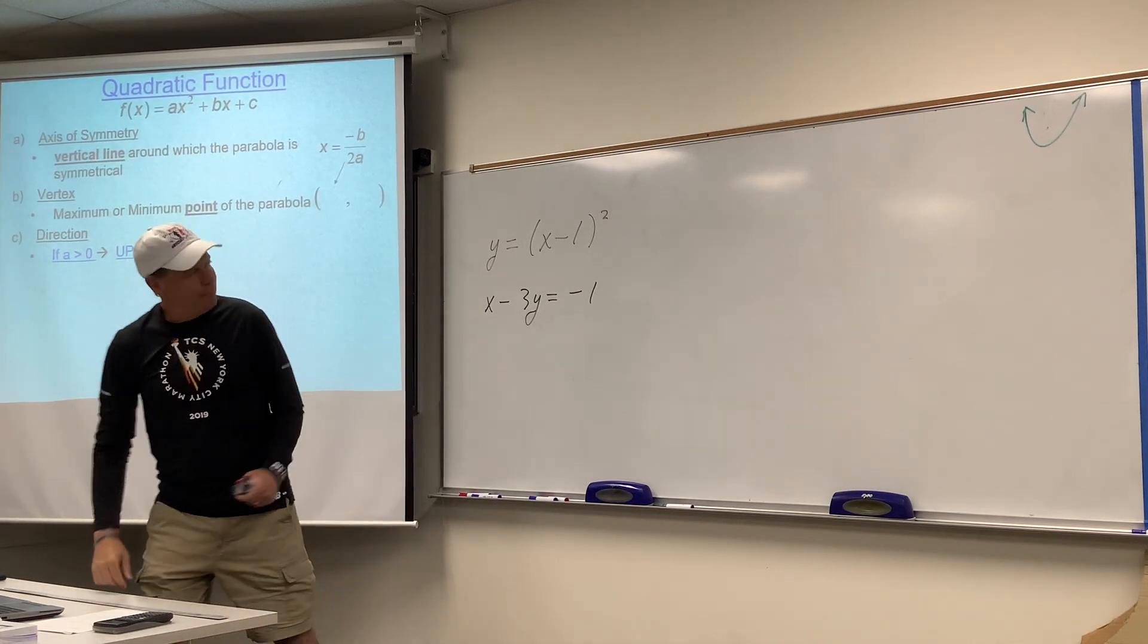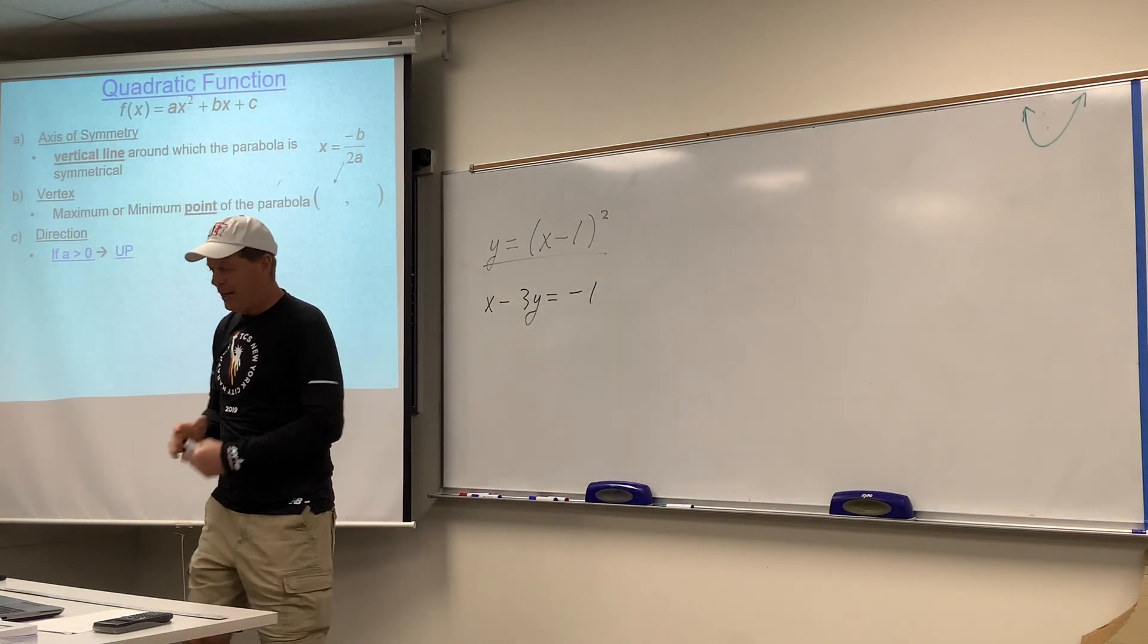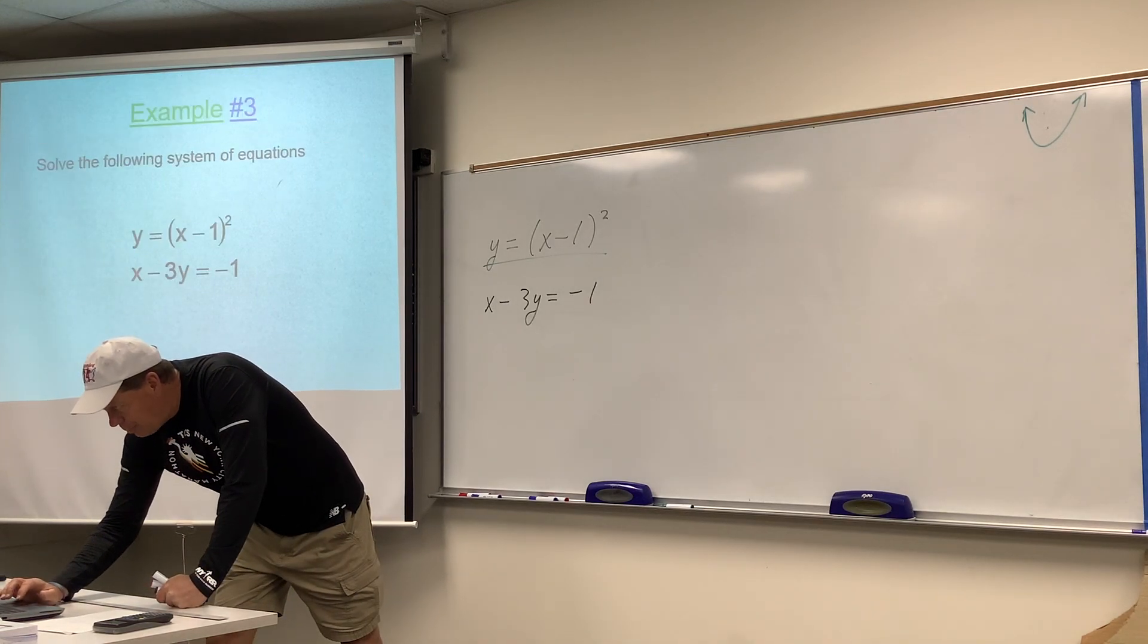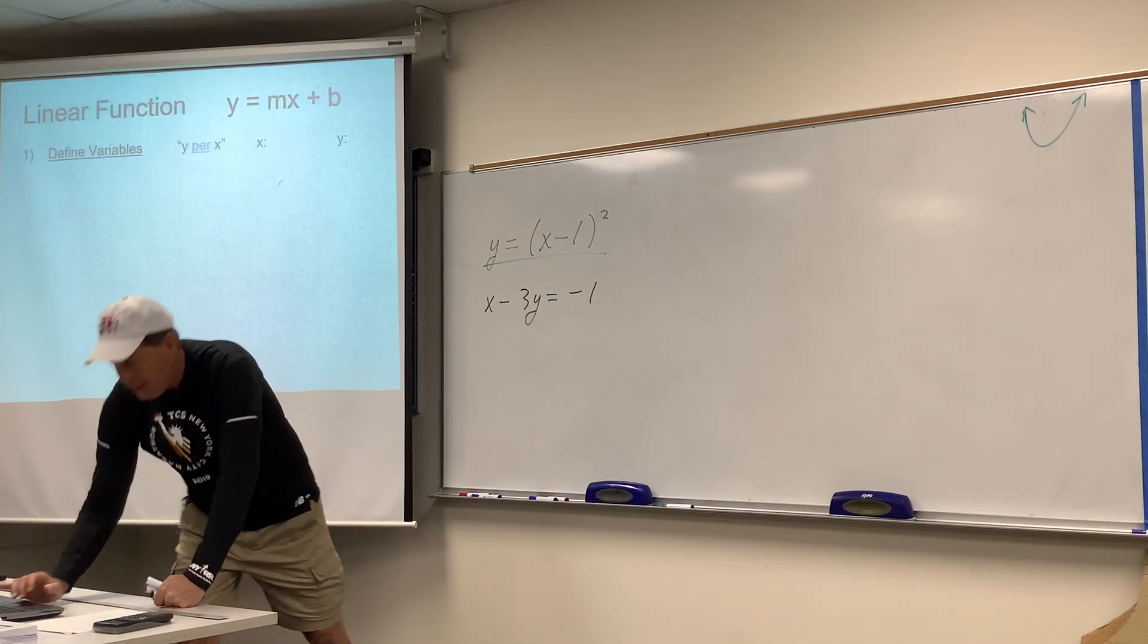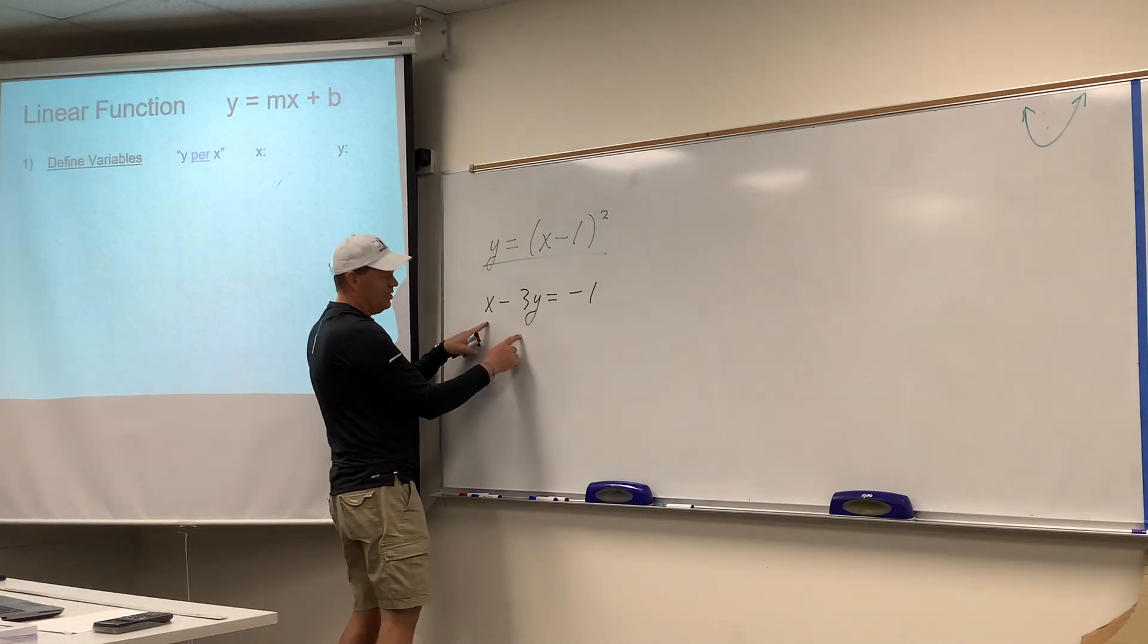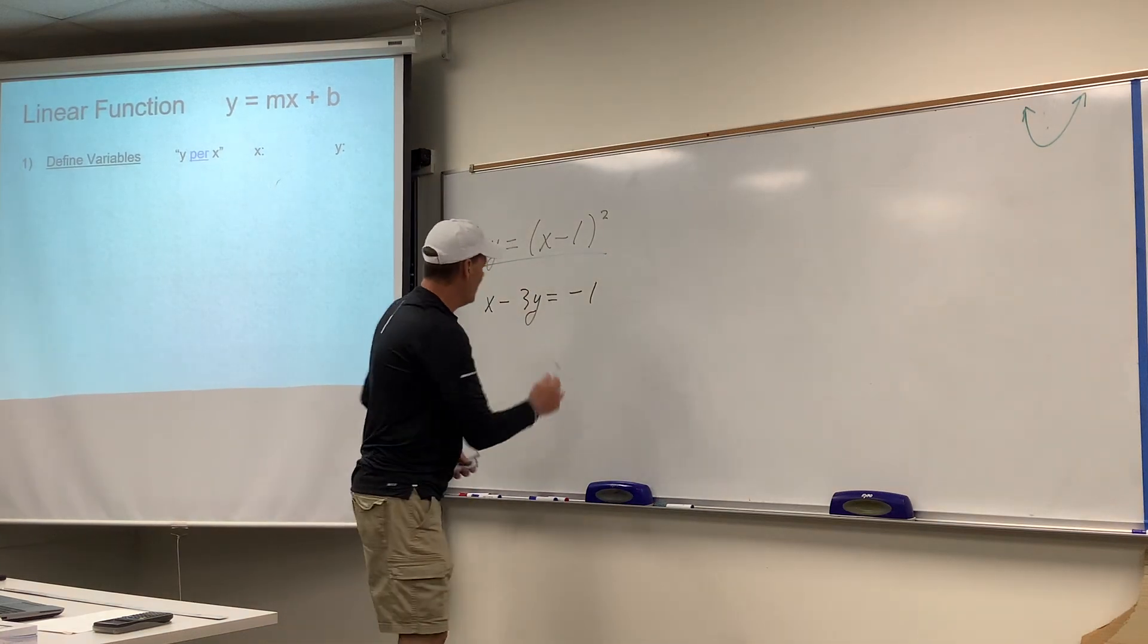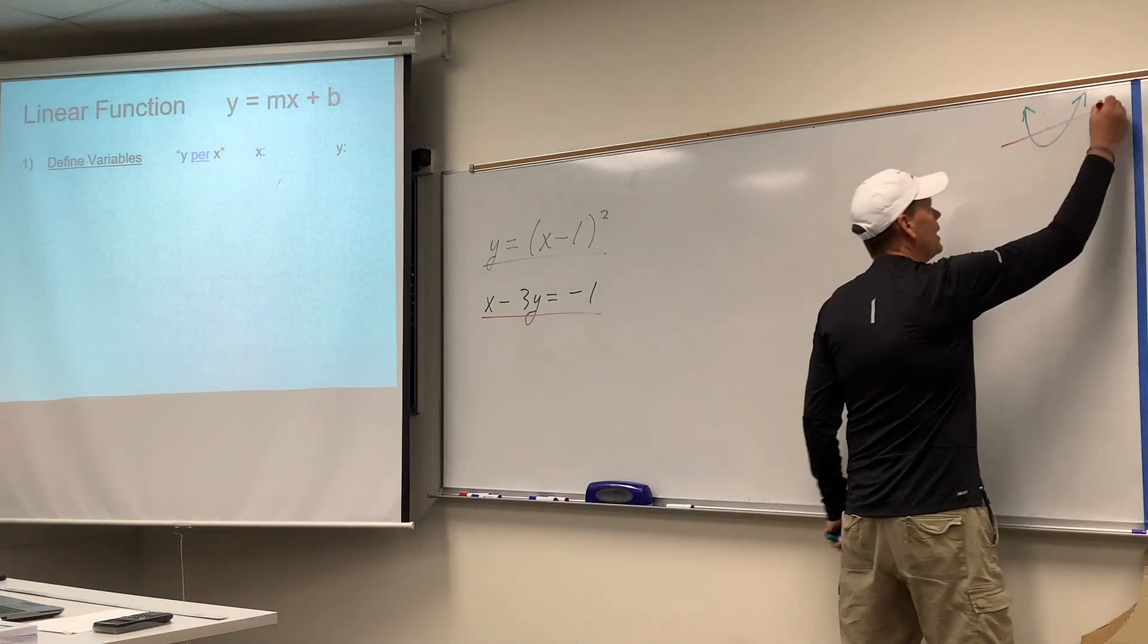So that graph, that top one there, would be this green parabola. Again, the color doesn't matter, but you get the point. And then the other one, I hope by now you would know that when both variables are to the first power, that's y equals mx plus b. It's not that form, but y to the first, x to the first.